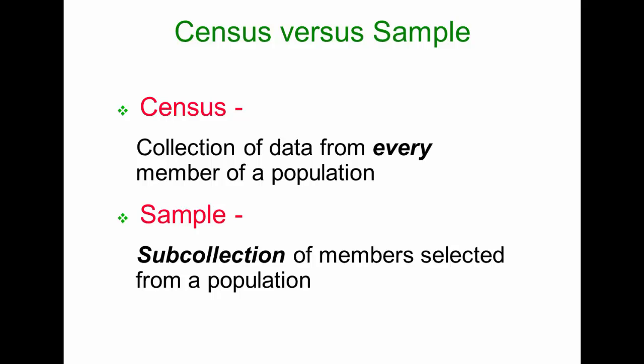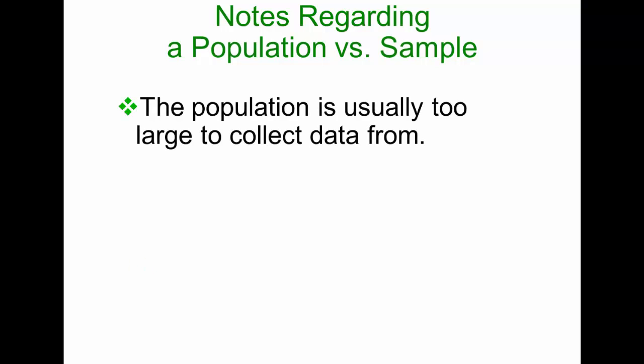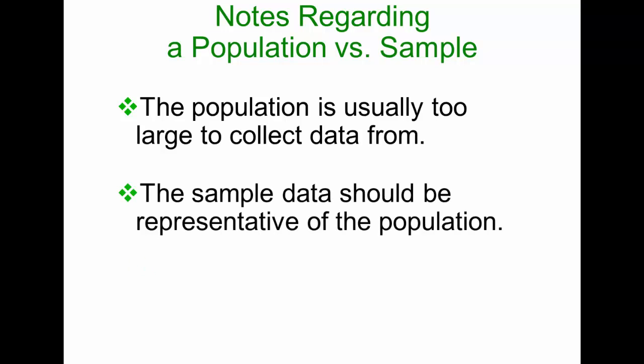Instead, we often use a sample. A sample is a sub-collection of members selected from a population. In this chapter, we're going to talk about exactly how those things get selected — methods of making that selection. Usually, what we'll do is get a sample and then use that sample to make some inferences about the population. The population is usually too large to collect data from — it can take too much time or require too many resources. Also, the sample data we get should be representative of the population; if our sample doesn't really represent the population, it's not going to be a good study.